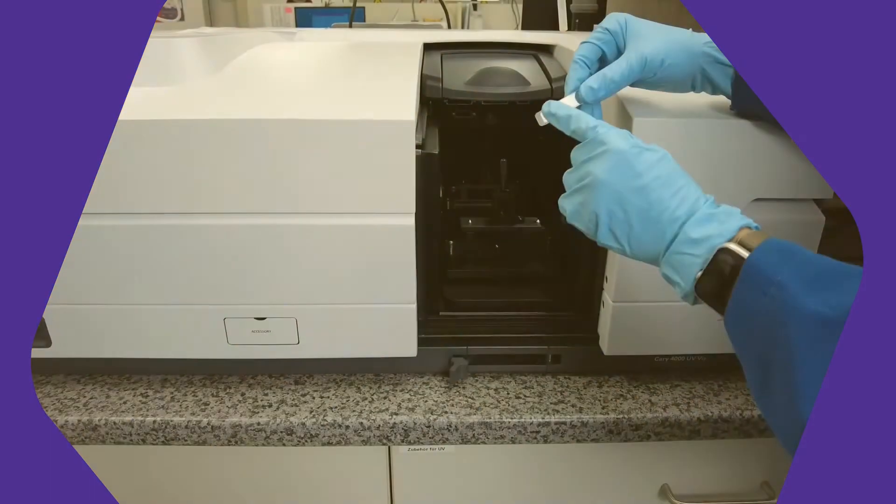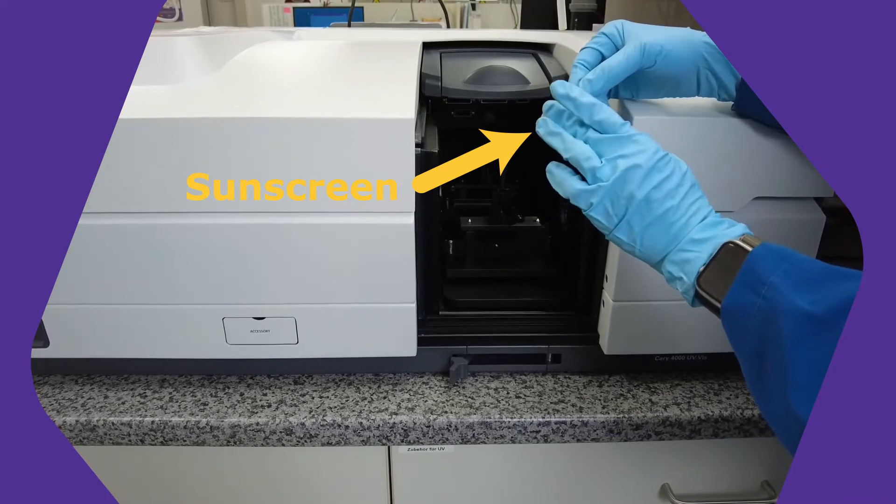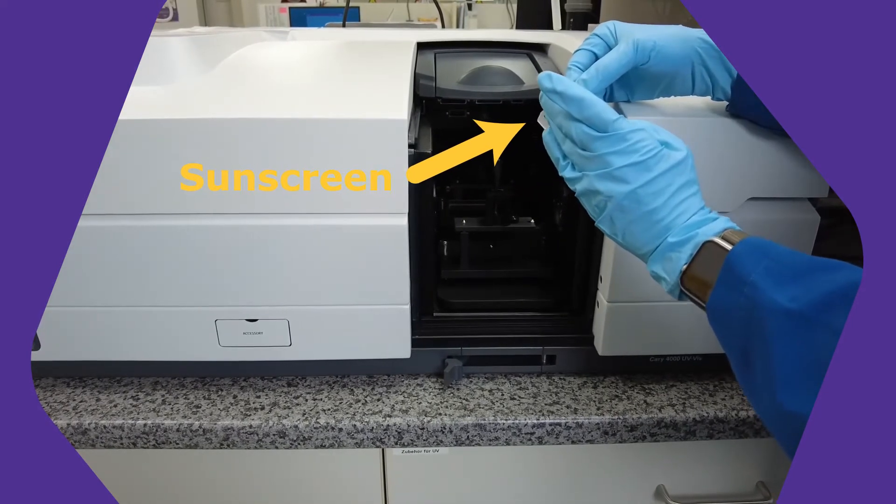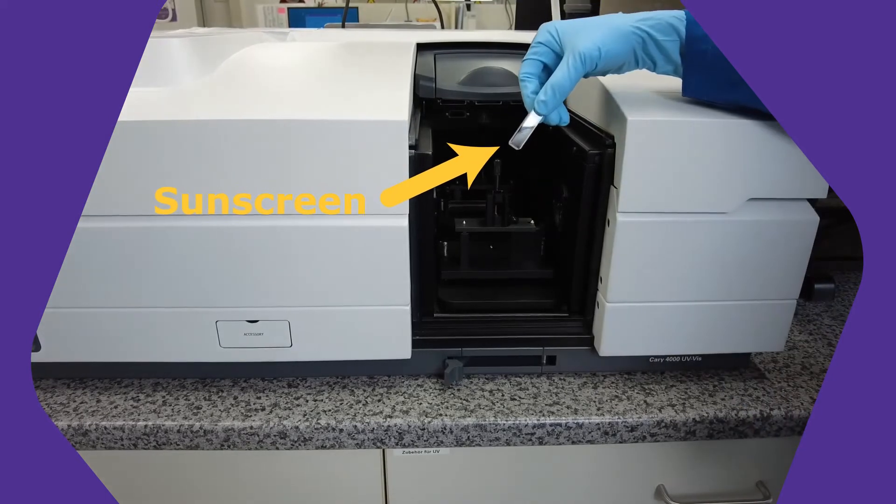After that, I put a very thin layer of sunscreen on one side of the cuvette. We now repeat the measurement. The sunscreen will block some parts of the electromagnetic spectrum.